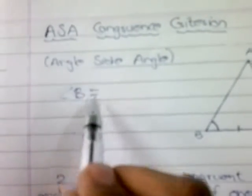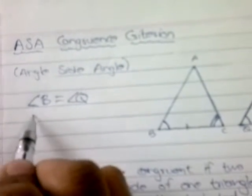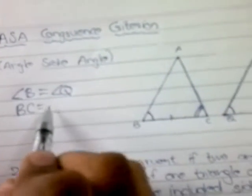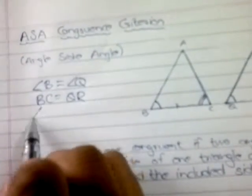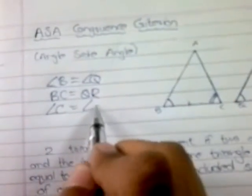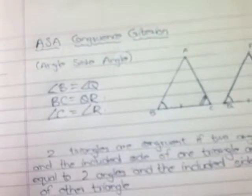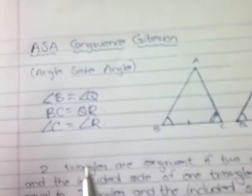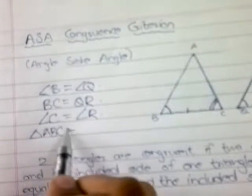Let us see how we can prove it. First, a brief introduction: angle B is equal to angle Q, BC is equal to QR, and angle C is equal to angle R. We have these three parameters — two angles and the side included between them — all equal. Therefore triangle ABC is congruent to...